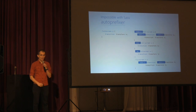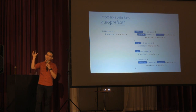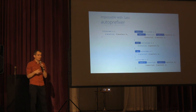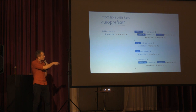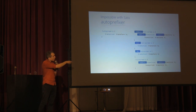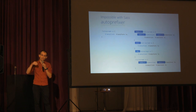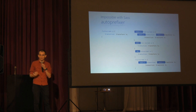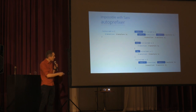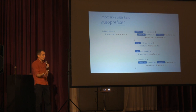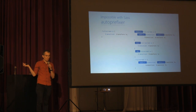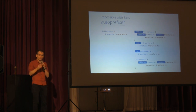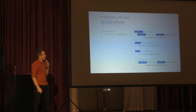What is Autoprefixer? Autoprefixer contains the Can I Use database, and it will look into your CSS and find every property that needs a prefix. Autoprefixer will add only the prefixes that are actually needed right now. For example, there are no prefixes for border-radius anymore, because it's very outdated. It works like magic — you just write simple CSS without mixins, without anything, and you get prefixed CSS.